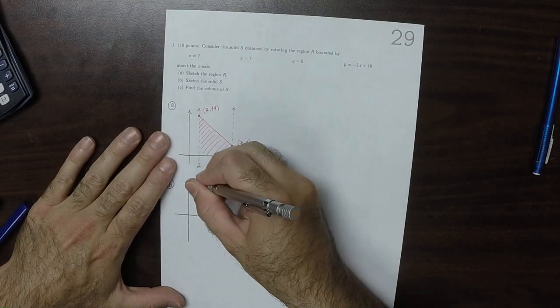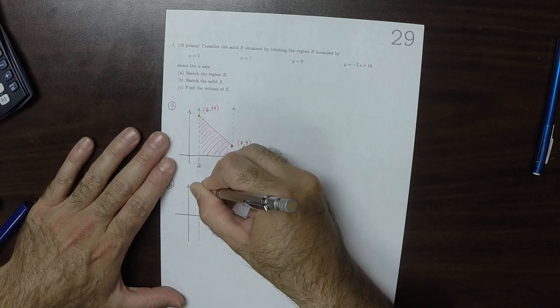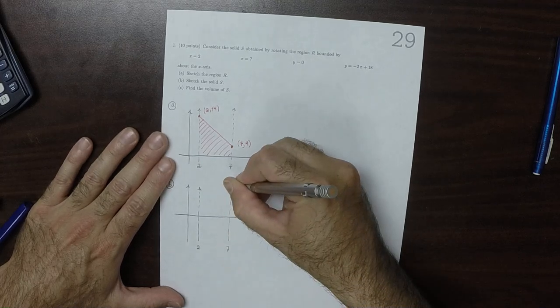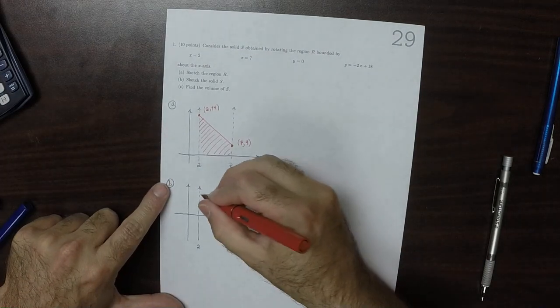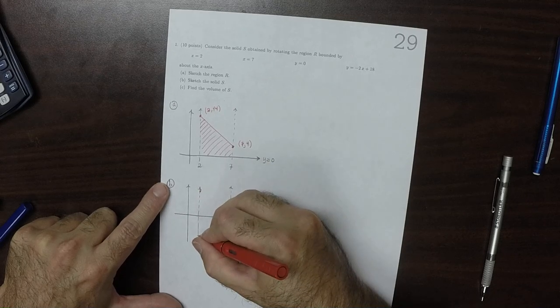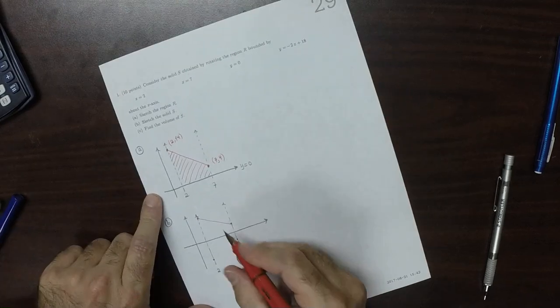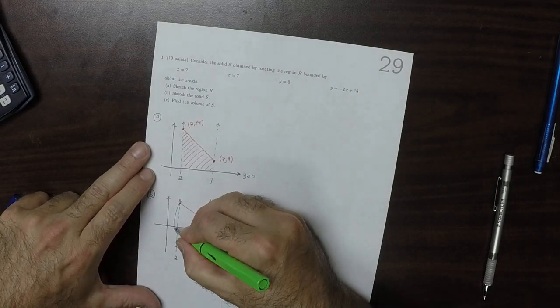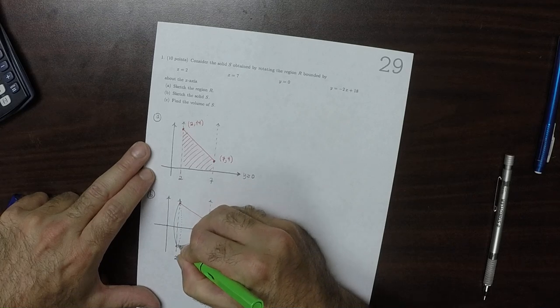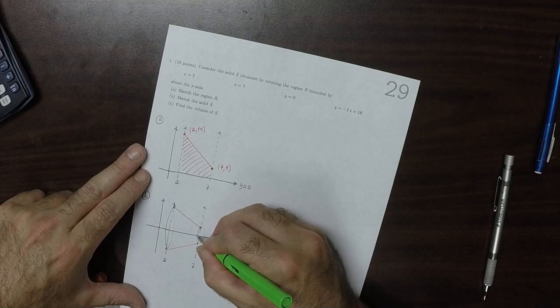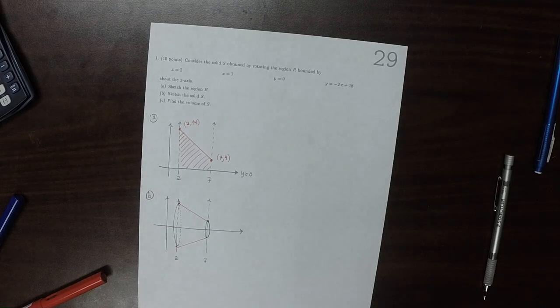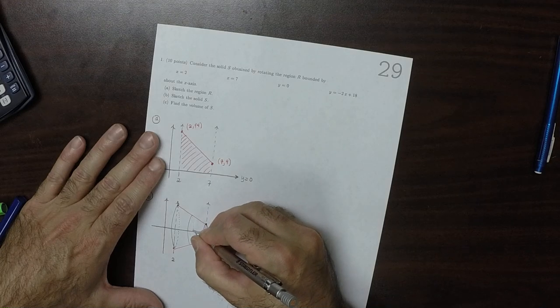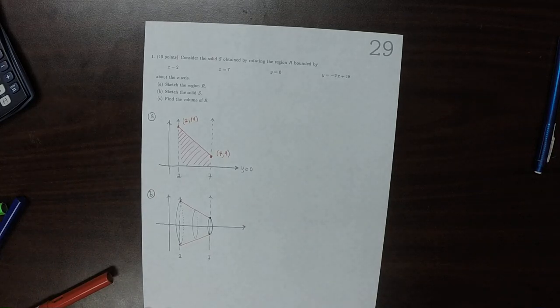So the look of it will be... so this shape, you would see that and that's behind. Okay, so that's part B.